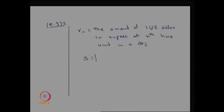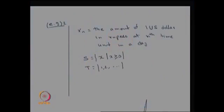The possible values of x are real numbers (including fractional values), since the exchange rate need not be an integer. So S = {x : x ≥ 0}. The parameter space T is the discrete set of time units — every minute, every 5 minutes, every hour, and so on. Therefore this forms a discrete-time, continuous-state stochastic process.